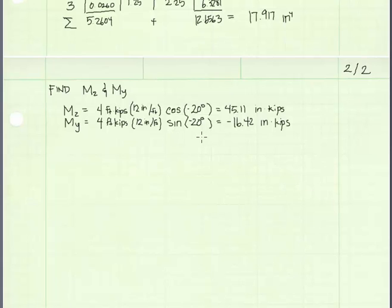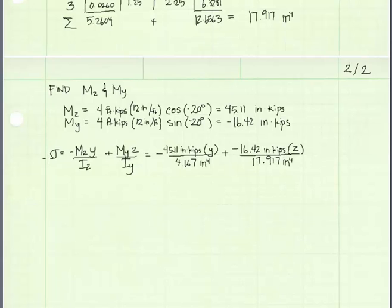The very last step is to find the stress at the four corners, A, B, C, and D of the cross section. In the final step, we will use the equation for calculating normal stress under unsymmetric bending. And I've filled in the values for Mz, My, Iz,